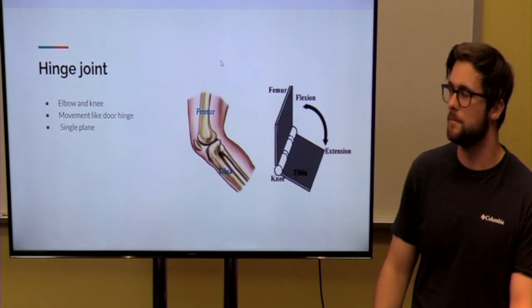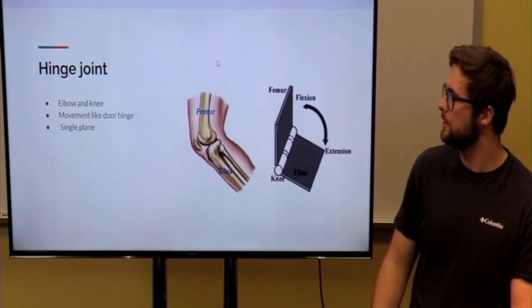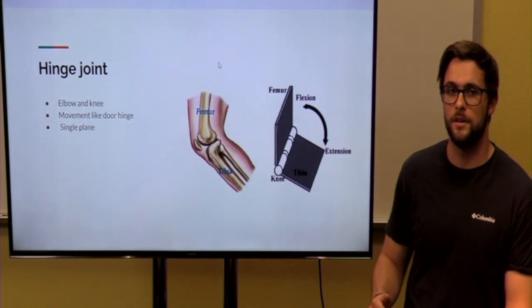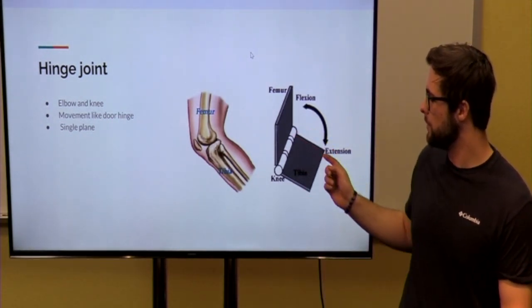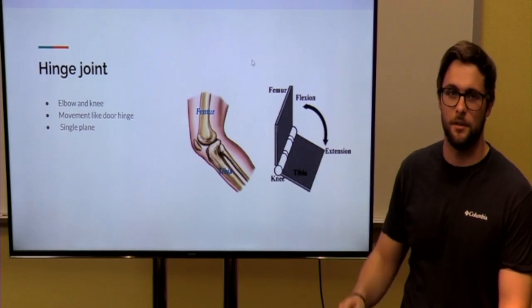After that, we have our hinge joint. In our hinge joint, that will be the joints kind of your knee and elbow. That will be a movement similar to a door hinge. It's going to be in a singular plane.